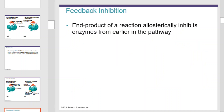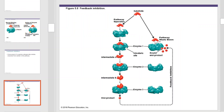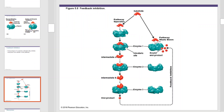Feedback inhibition occurs when the end product of a reaction allosterically inhibits enzymes from earlier in the pathway. Feedback can occur in both a positive and negative way. In negative feedback, the final product of a reaction series feeds back and stops its own production. In positive feedback, the end product would enhance or increase the production of the final product.